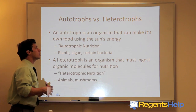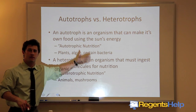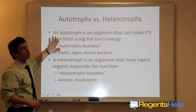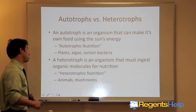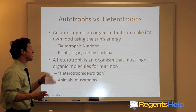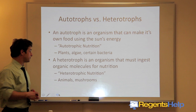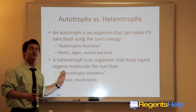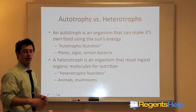An autotroph is an organism that can make its own food using the sun's energy. You should be thinking plants, algae, and certain bacteria. Autotrophs have chloroplasts — the sites of photosynthesis that allow them to utilize the sun's energy. A heterotroph is an organism that must ingest organic molecules for nutrition — macromolecules in the form of carbohydrates, lipids, and proteins. Think animals and also mushrooms, because mushrooms absorb their nutrients from the environment around them.